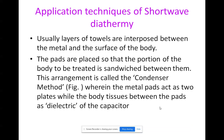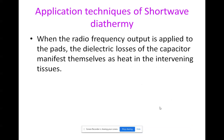In the condenser method, the tissue is sandwiched between the pads. The metal pads act as the two plates of a capacitor, while the body tissue between the pads acts as the dielectric. When the radio frequency output is applied to the pads, the dielectric losses of the capacitor manifest themselves as heat in the intervening tissue — this is how diathermy applies heat to body tissue.